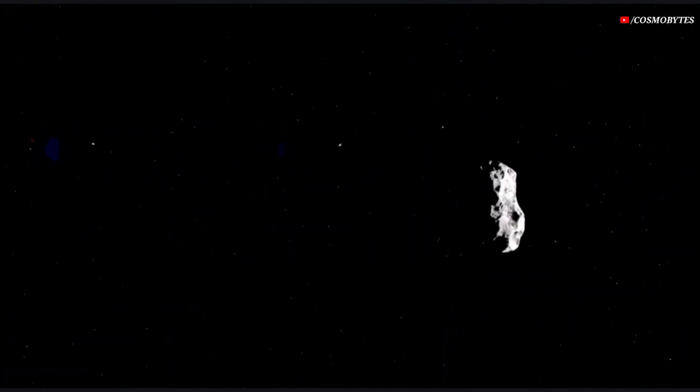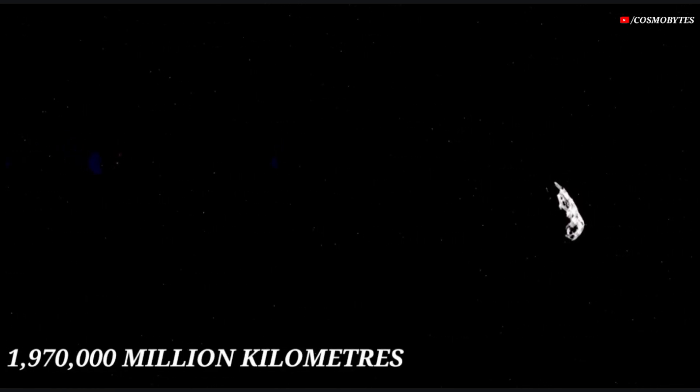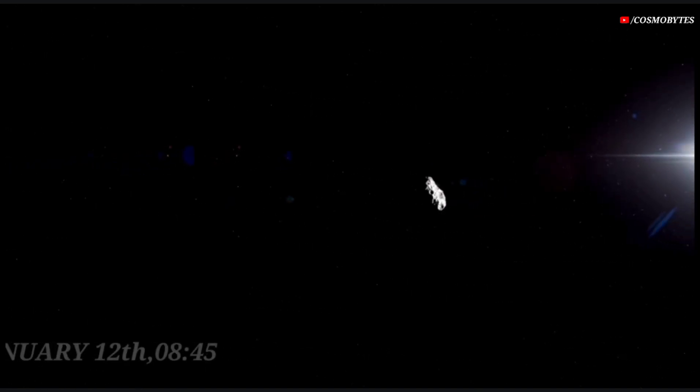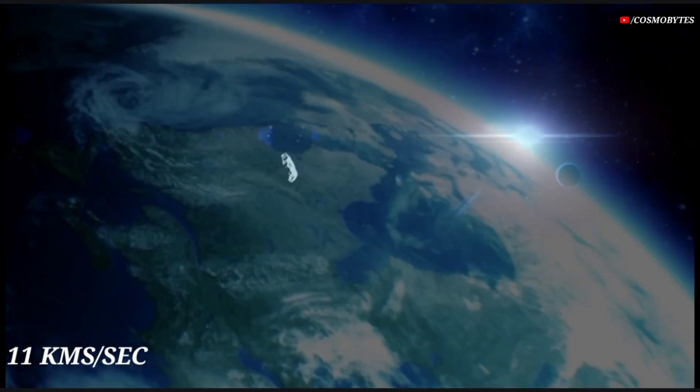The distance of the asteroid 2022 YD5 from Earth is currently 1,970,000,000 kilometers. This asteroid will pass past Earth on January 12 at 8:45 at a speed of 11 kilometers per second.